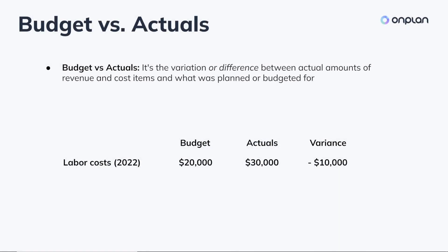Budget versus Actuals is a comparison of two or more sets of data. It's the variation or difference between actual amounts of revenue and cost items and what was planned or budgeted for. If we budgeted $20,000 for labor in a given month and the actuals reported were $30,000, then the variance would be minus $10,000.